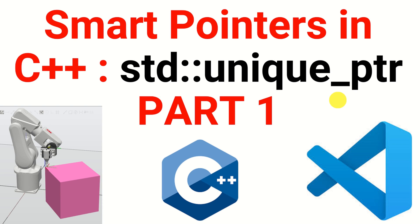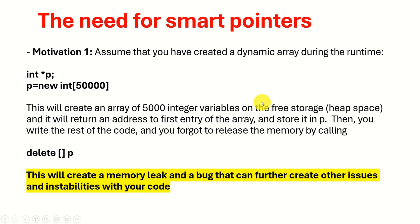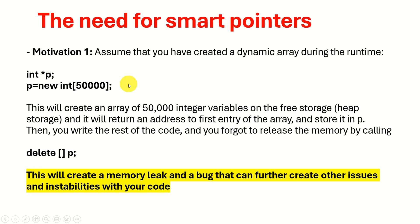Hello friends, subscribers and new viewers of this channel. In this tutorial we explain the basics of smart pointers in C++. In particular we focus on the smart pointer called unique_ptr, and this is the first part of the tutorial. In this part we will explain how to use this pointer for simple data types such as integers, floats, etc. In the second part we will explain how to use this smart pointer in the case of classes. This tutorial is very important for proper understanding of modern C++, and also for robotics and mechatronics engineers who are coding in Robot Operating System.